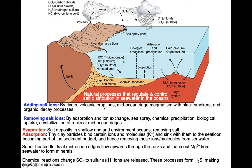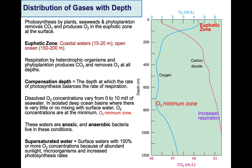Let's take a look at the distribution of gases with depth. On the right-hand side, we're looking at a diagram of depth in seawater versus oxygen and carbon dioxide distribution. Within the top 1,200 meters, dissolved oxygen amount changes significantly with depth.